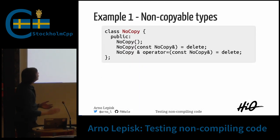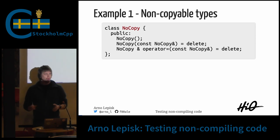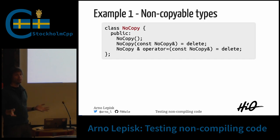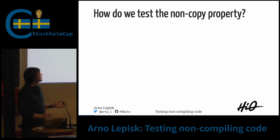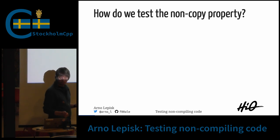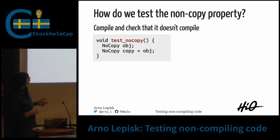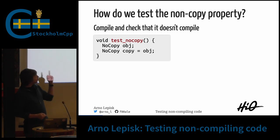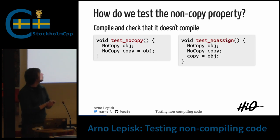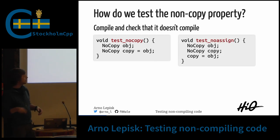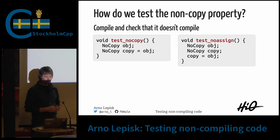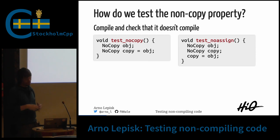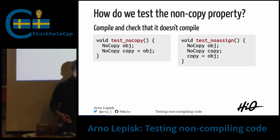Let's start with the first example: a non-copiable type. I think most of you have written a non-copiable type at some point. How do we test the non-copiable property? We can create a small test program — like this — we test the copy construction and we test the assignment operator. Then we compile it, or try to compile it, and it doesn't work, of course.